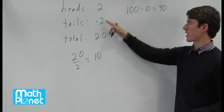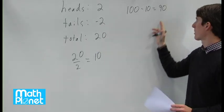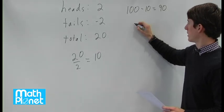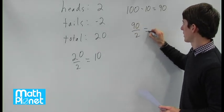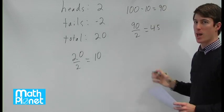Those must have been equal. These are the same value but opposite, so that must have been an equal number of either one. So 90 divided by 2 gives us 45 of each heads and tails.